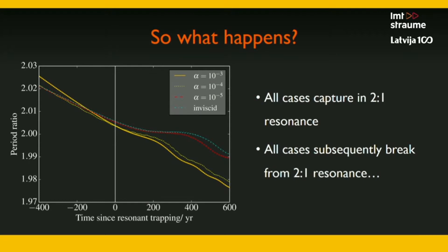Here I've got the period ratio between our two planets for four different simulations, all with different viscosities. We start them just outside the 2-to-1 resonance, then they migrate inwards. The larger planet catches the smaller planet, and at some point around the exact commensurability, you see the convergent migration starts to plateau — a result of the two planets being caught in the 2-to-1 mean motion resonance. But what we actually found is that the mean motion resonance can be broken, and the two planets start converging upon each other once again. This can go some way to explaining why a lot of Kepler multiple-planet systems don't exhibit these mean motion resonances.